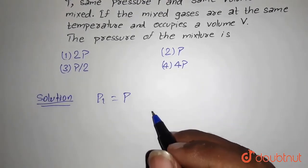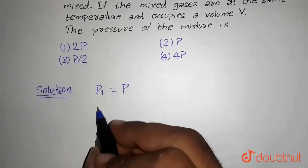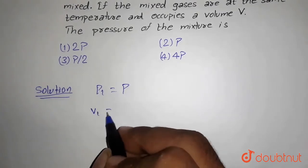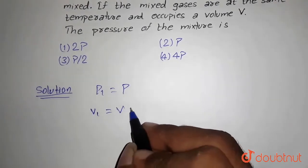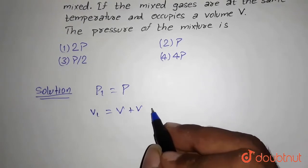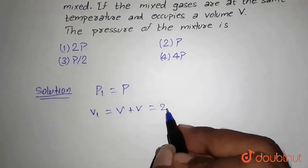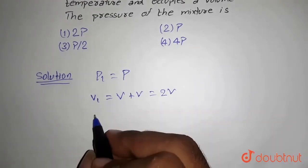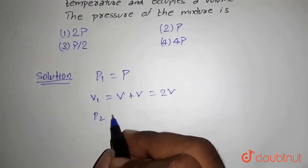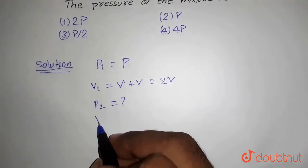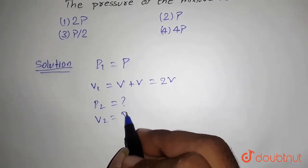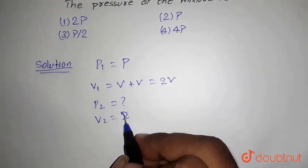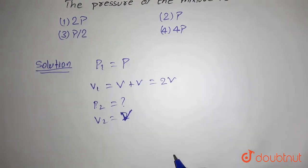It is given that initial pressure P1 is P. This is our initial pressure and since it is given V1, there are two gases of volume V both having volume V. That means V1 will be 2V and so we have to find P2 and V2 is given that is V.